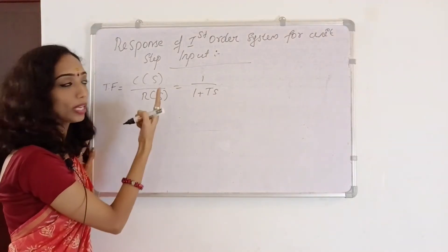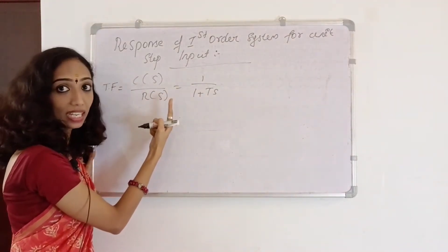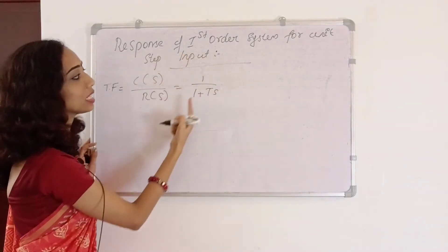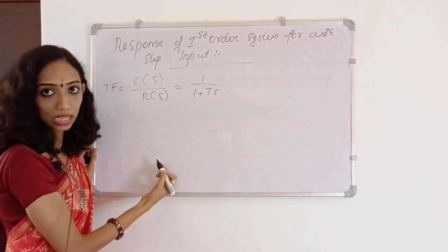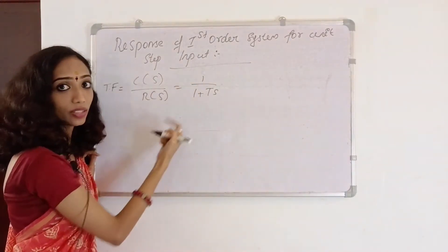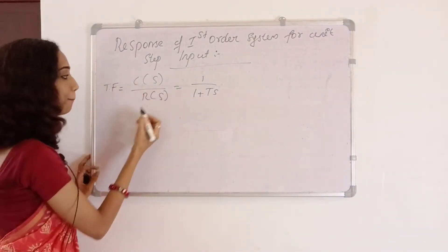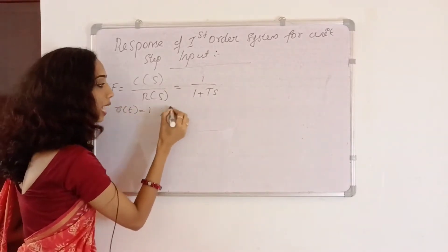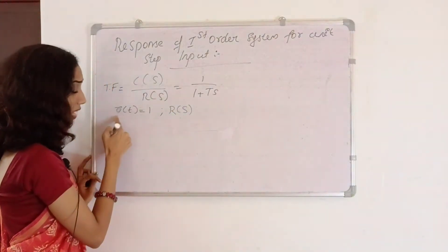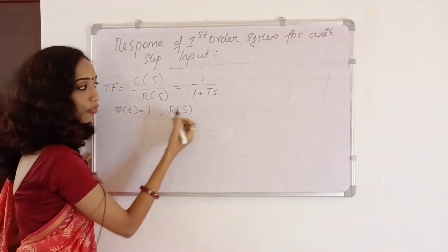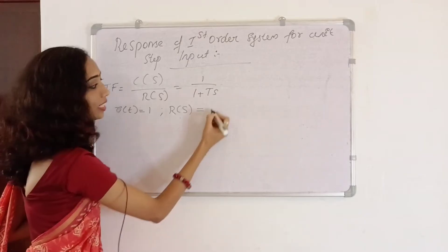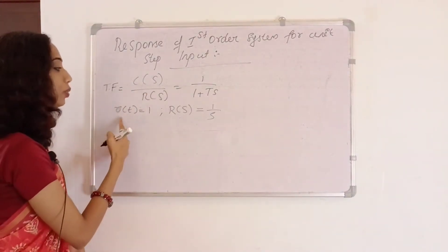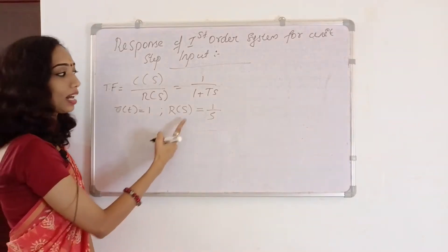C of S will be the output. R of S will be the input. Now, R of T is equal to 1. Therefore, Laplace of R of T is equal to L of R of T, which equals 1 by S. The unit step input is 1 by S.